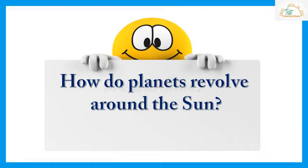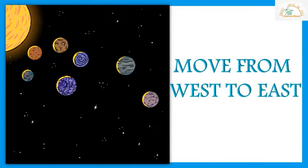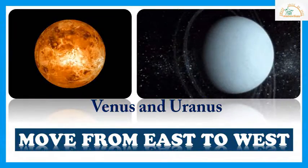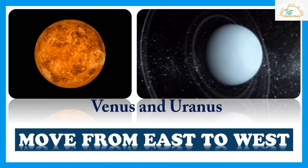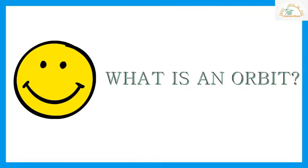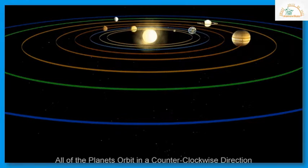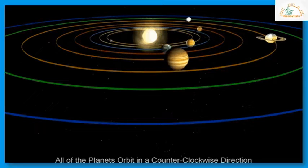The second question asked was: how do planets revolve around the sun? All planets revolve around the sun from west to east. But planets like Venus and Uranus move from east to west. And the third question was: what are orbits? All planets move around the sun on fixed paths, and these paths are called orbits.